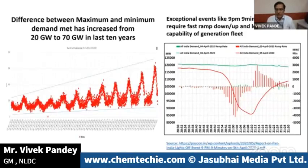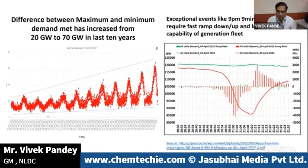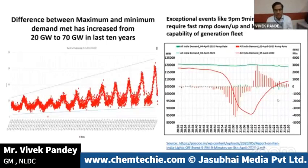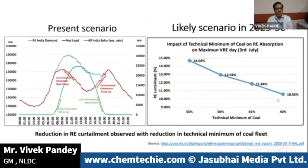Generation must be ramped back down to the technical minimum level, a swing of 70 gigawatts. Apart from this, there are exceptional events — such as the Earth Hour lights-off call, and a similar event on 5th April at 9 PM, a 9-minute event with a simultaneous reduction in demand followed by an immediate rise when everyone switched lights back on. Such events require a lot of flexibility from generating stations.